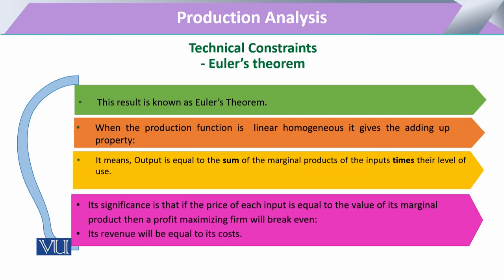Looking at this result, that is called the Euler theorem. Whenever a production function is linear homogeneous, it uses the adding up property — and this adding up property is what we also called the product exhaustion theorem. The output is basically a summation of the marginal productivity of the inputs, and marginal productivities are further multiplied by their level of use. This depends on two things: the marginal productivity of capital and labor (z1 and z2), and their level of use — meaning the internal ratio of the inputs.